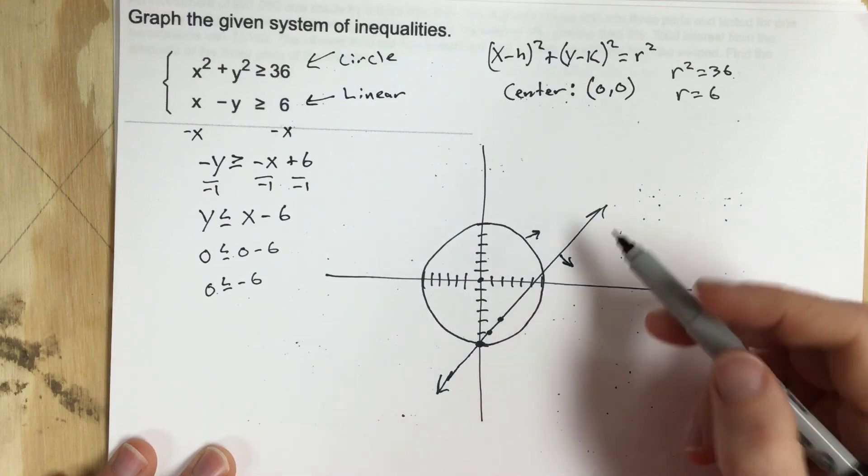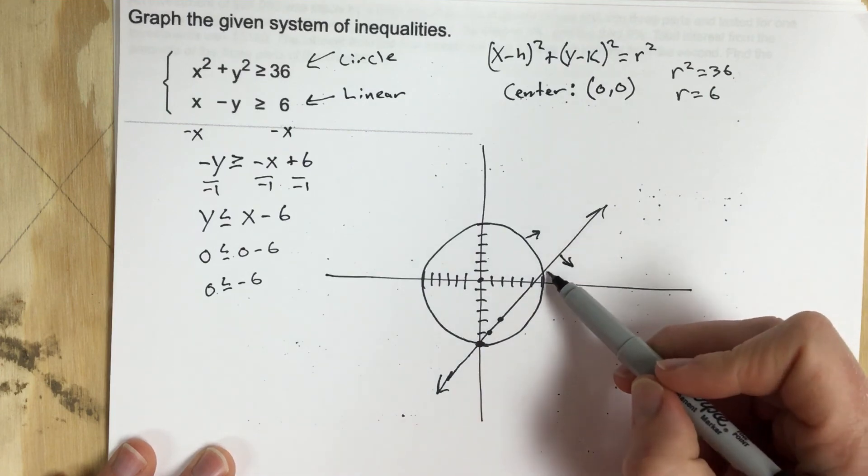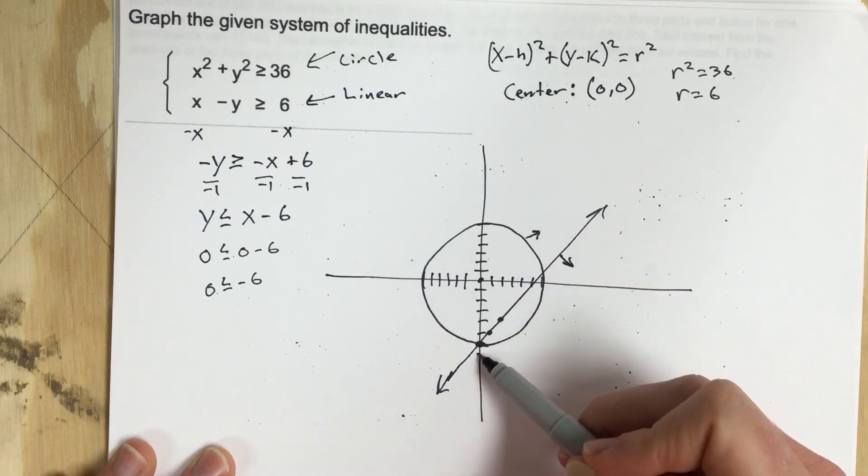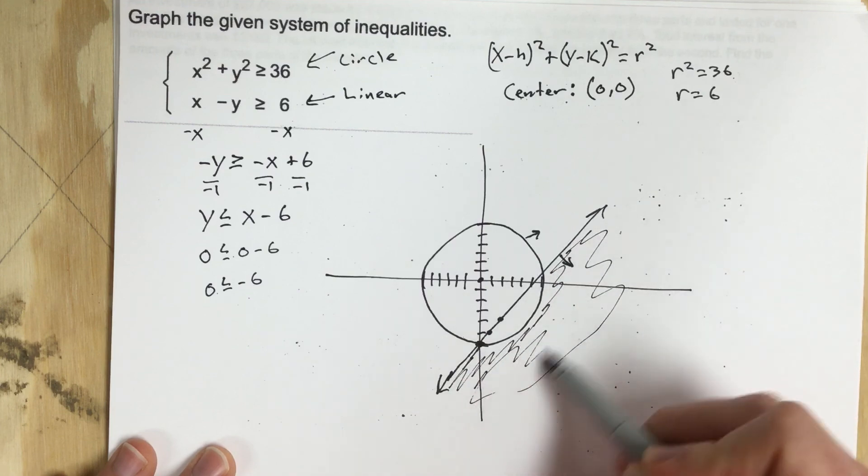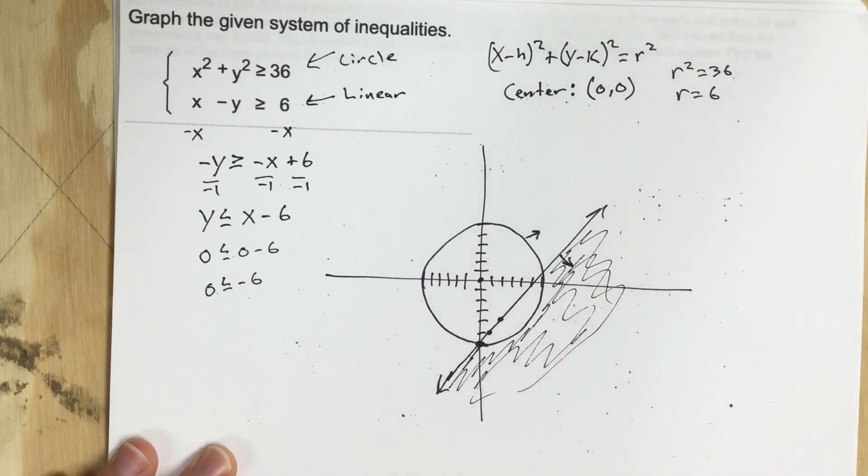So that means that my solutions are going to lie outside of the circle but underneath this line here. Okay. Now let's do the work.